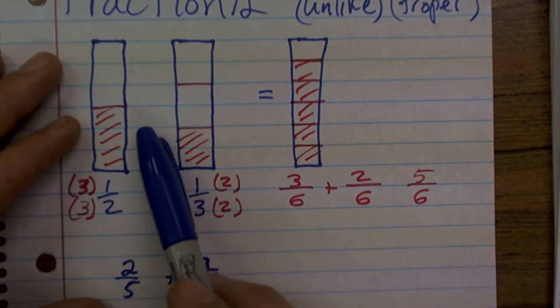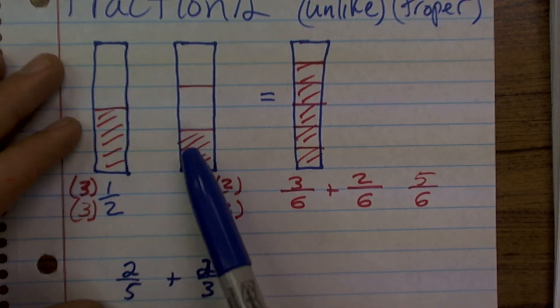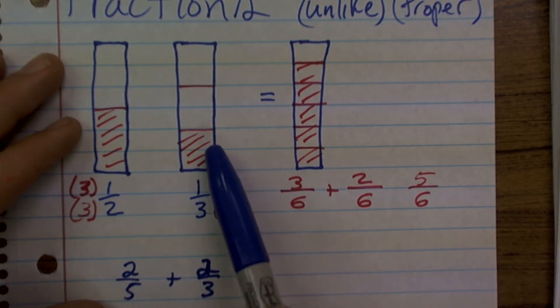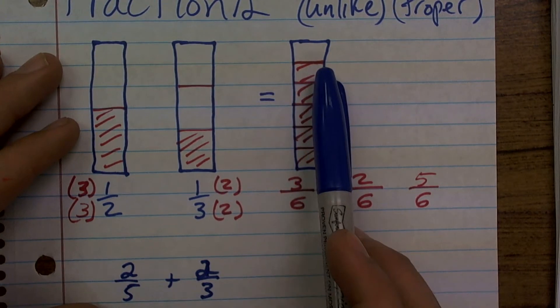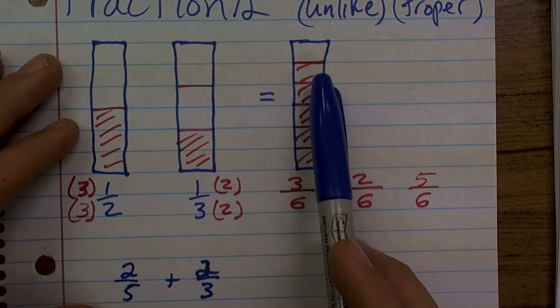Well, what is that? Is that 2 halves? No, because 2 halves would make 1. Is that going to be 2 thirds? No, because look, 2 thirds only goes up here. It doesn't get to as high as what actually your answer is going to be.